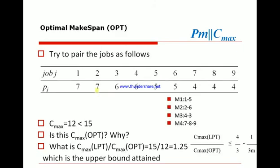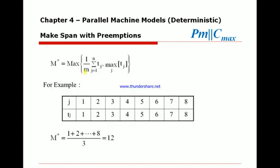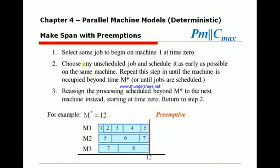So we're gonna, the algorithm goes like this. I'm gonna jump a little bit just to show you the algorithm. So the algorithm is: select some job to begin on machine one at time zero the first job, choose any unscheduled job and schedule it as early as possible on the same machine, repeat the step until the machine is occupied.